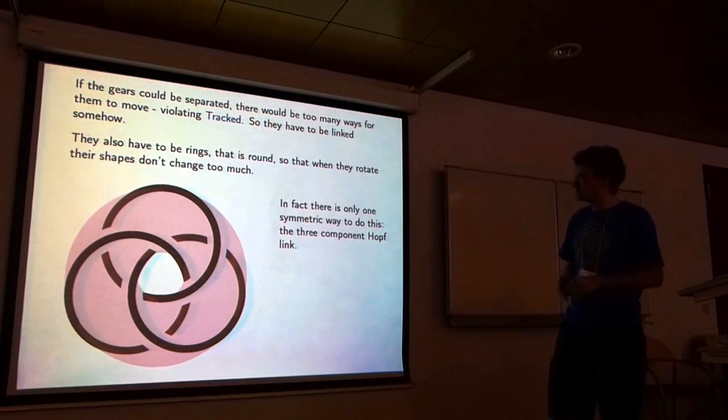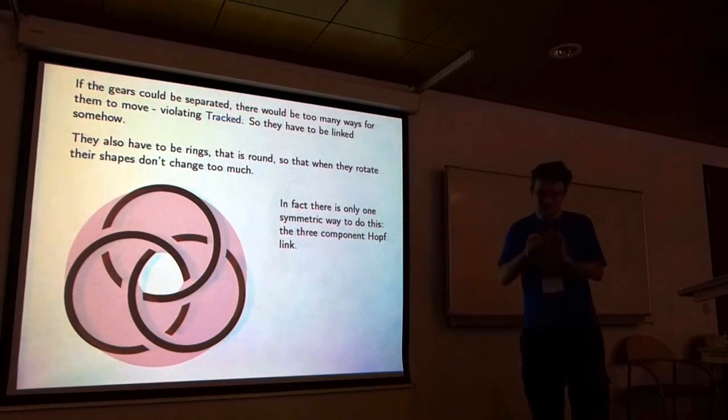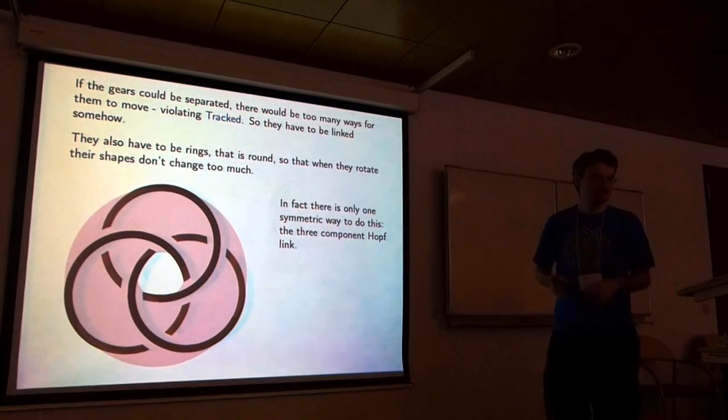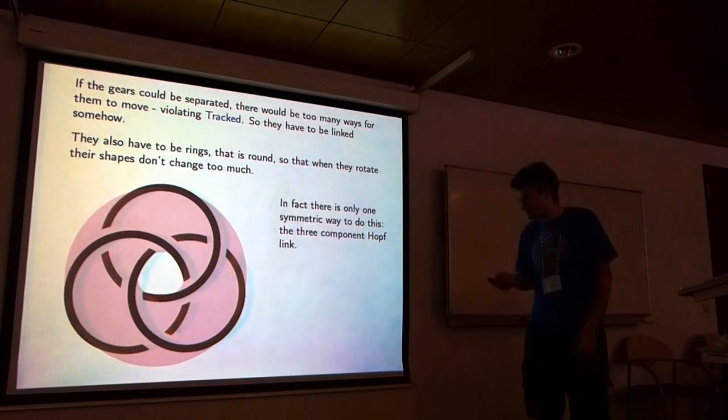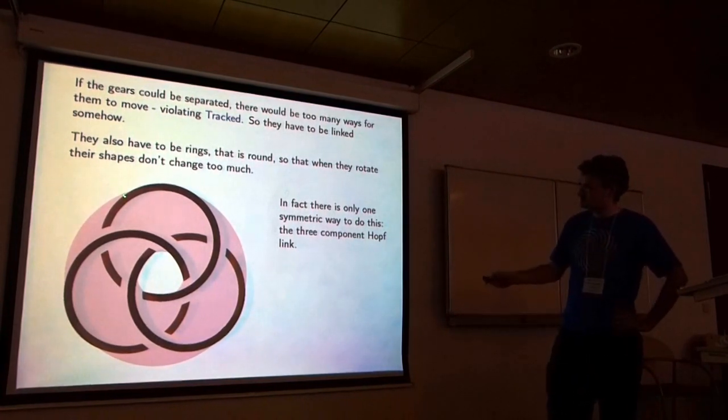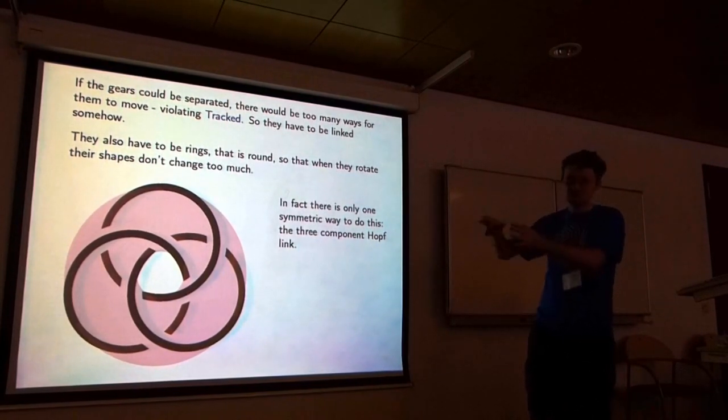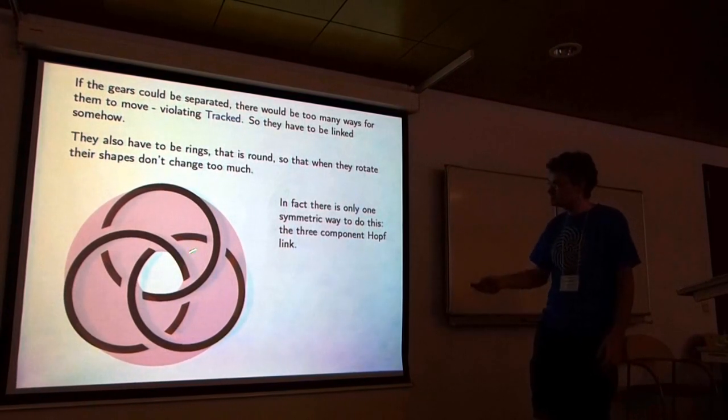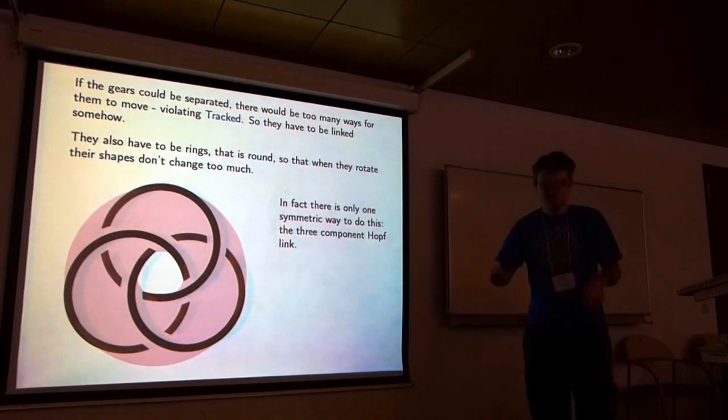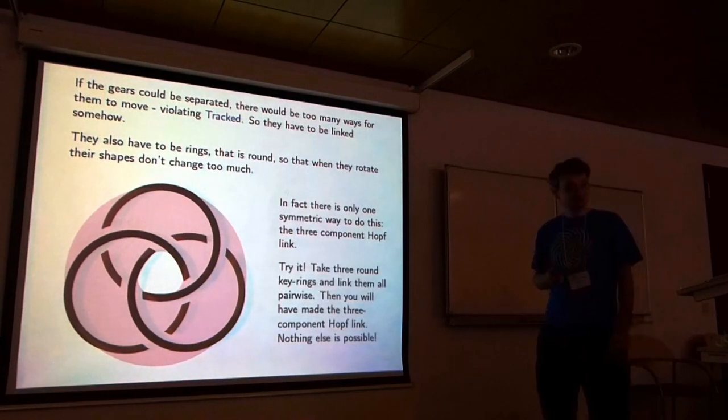And it turns out that if you also want it to be symmetric, there's only one way to do this. There's only one way if you have round circles and you're making a linked mechanism, it has to be this. And this is called the three component link. You're supposed to think of, I've got these three circles, and the mechanism is going to be these cycles are the core of the mechanism, and they're all going to be rotating around in the same direction.